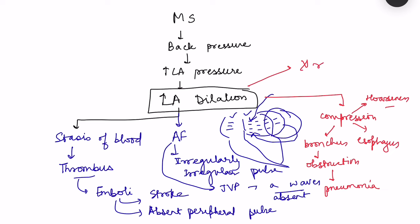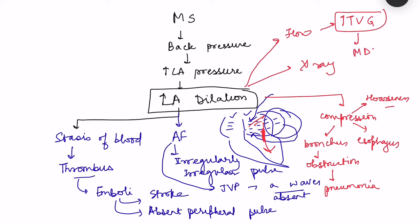Left atrial dilation is seen on chest X-ray. Because of increased left atrial pressure, flow is maintained from left atrium to left ventricle, but the increased transvalvular gradient combined with the narrowed mitral orifice produces blood flow turbulence, which creates a murmur. This is a mid-diastolic murmur because blood flows from left atrium to left ventricle during diastole, and it can also be felt as a diastolic thrill.